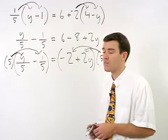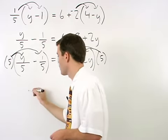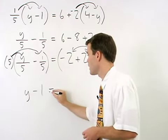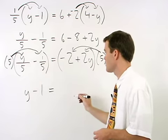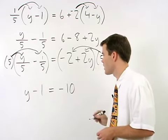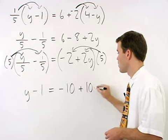On the left, our 5's cancel, and we're left with y minus 1. On the right, 5 times negative 2 is negative 10, and 5 times positive 2y is positive 10y.